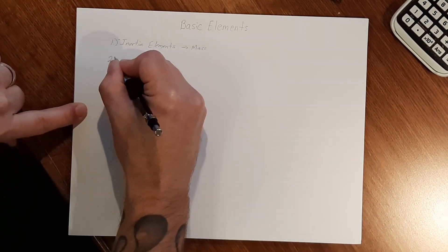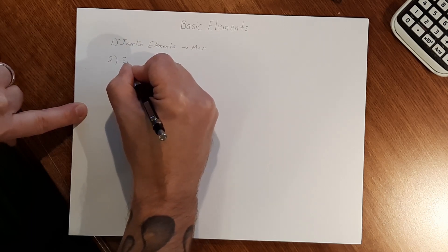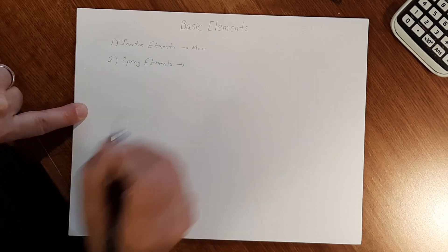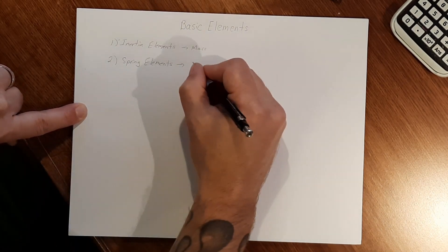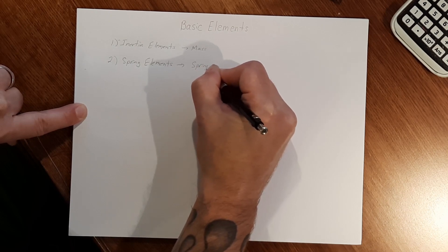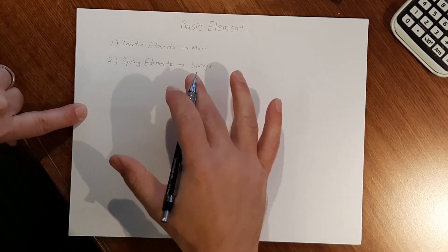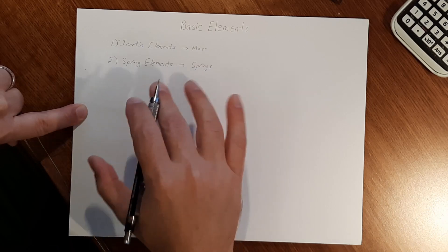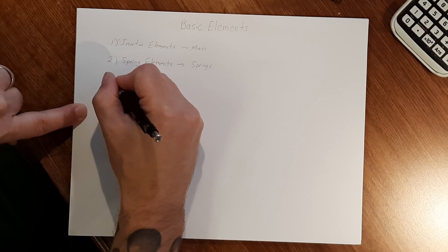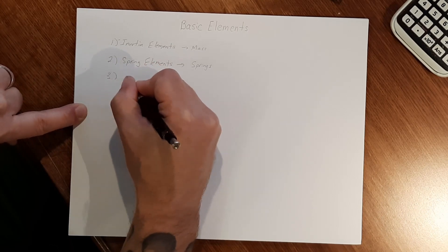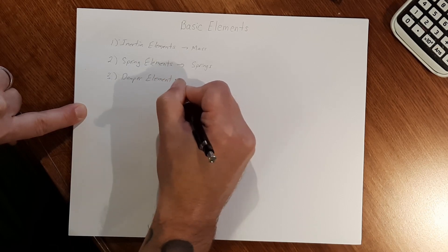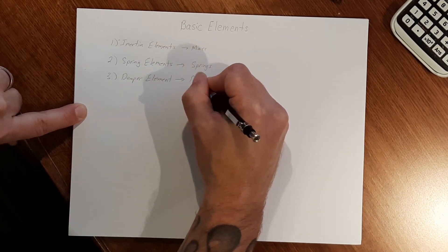The second element is going to be your spring elements, and that's pretty self-explanatory — that's going to be springs. We're going to talk about these a little more in depth once we get through what the three elements are. And your third one is going to be a dampening element, and these are made up by dampeners.